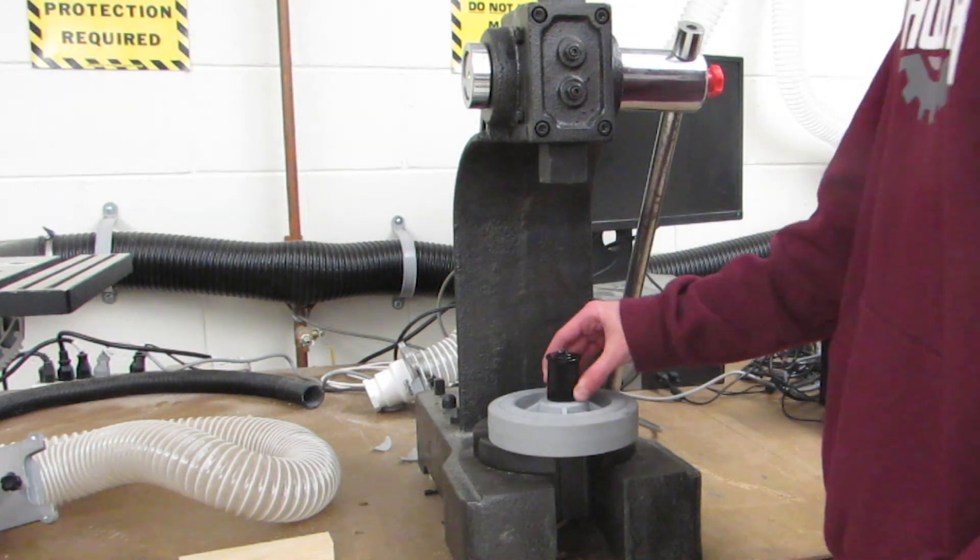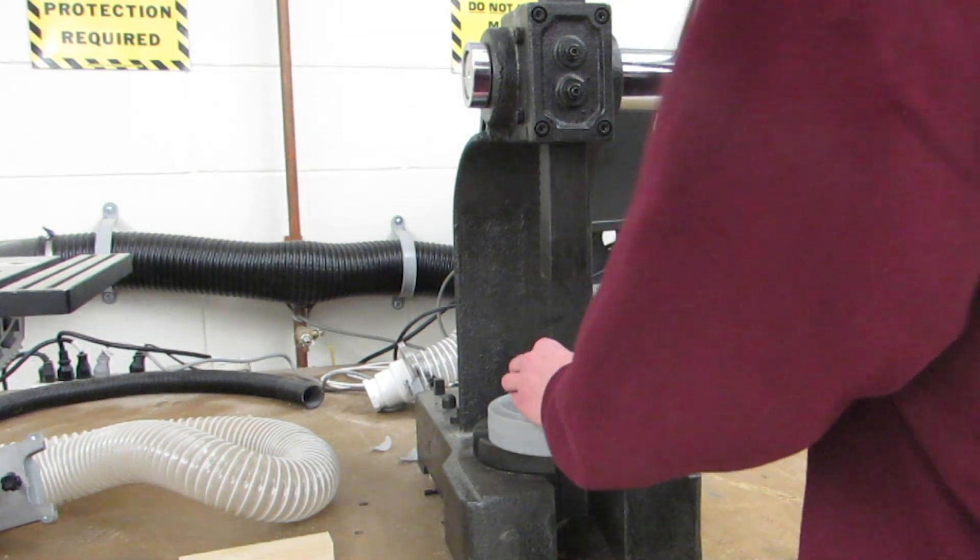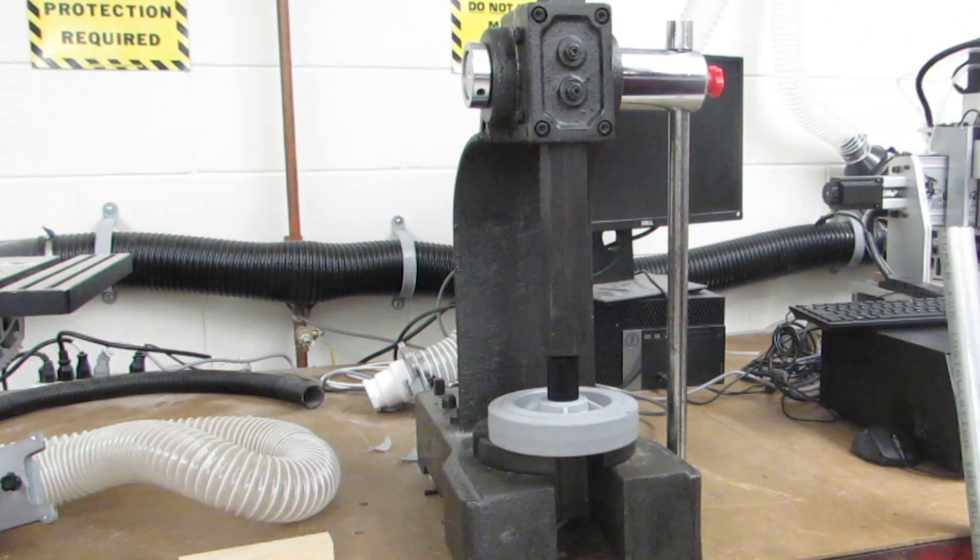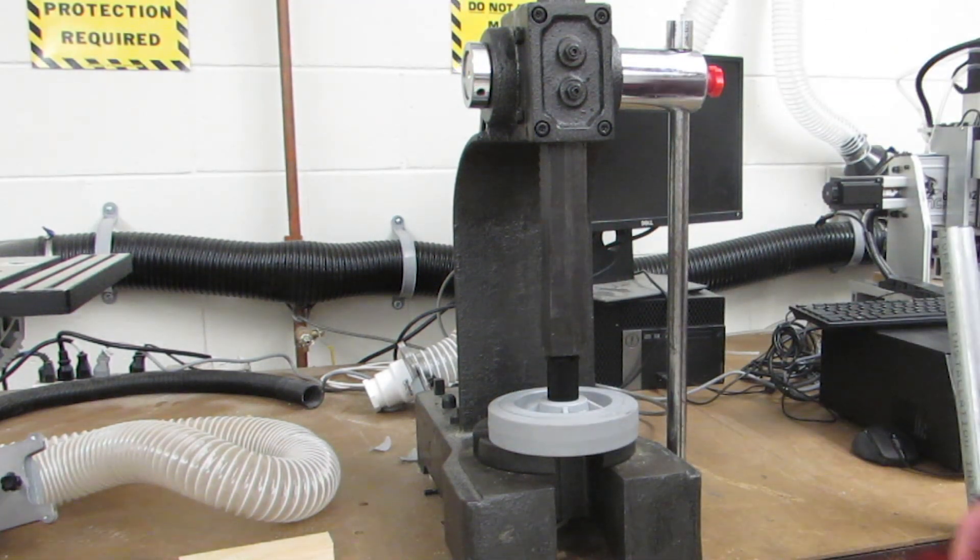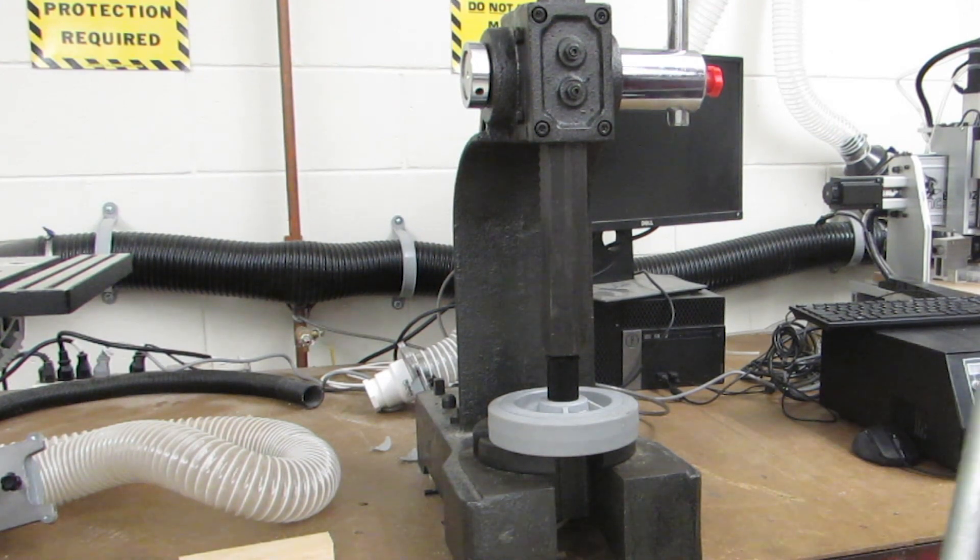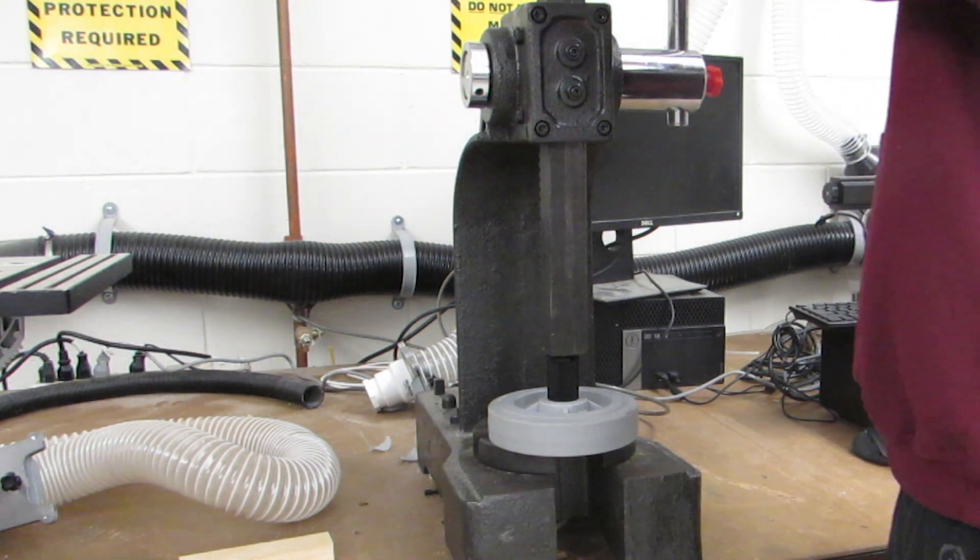I'm going to start by placing the hub into the center of the Colson and lower the arbor press to ensure that when I'm forcing down on the hub, it'll be going into the wheel perpendicular and not at an angle. Once I know I'm perpendicular to the wheel, I'm going to get an aluminum tube just to give myself a little bit of extra leverage forcing the hub into the center of the Colson.